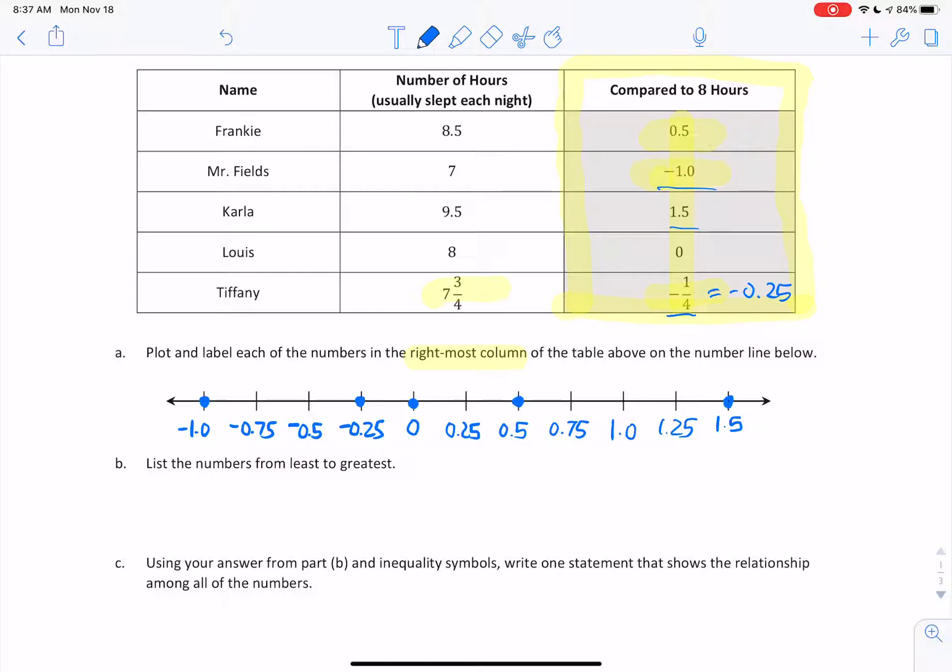Let me go ahead and do some labeling. I'll just use their first initial. So that would be F for Frankie. Mr. Fields, I'll use an M since F is already used. K for Carla at 1.5. L for Louis at 0. And T for Tiffany at negative 0.25, also known as negative 1 fourth.